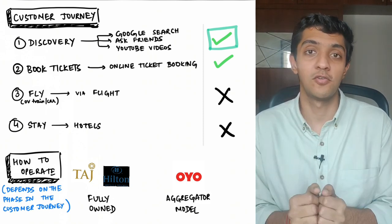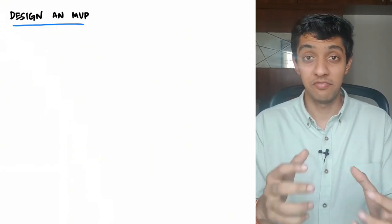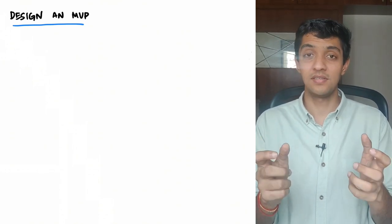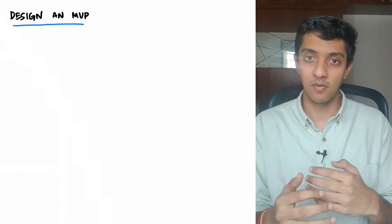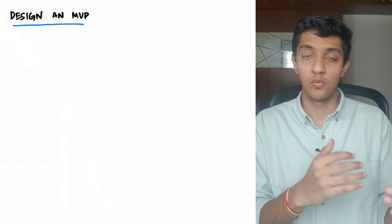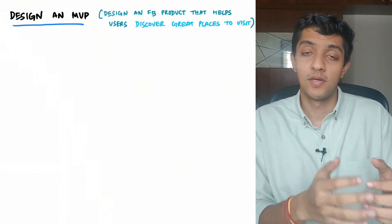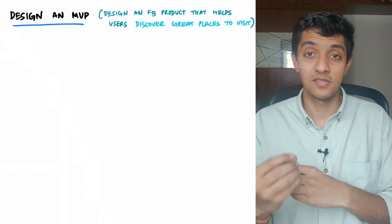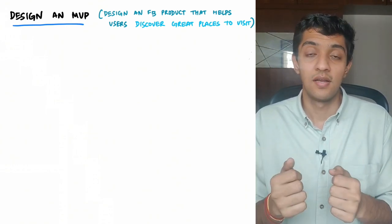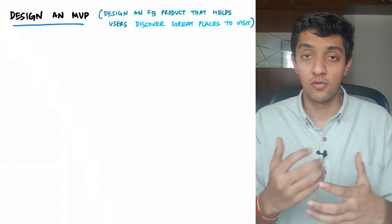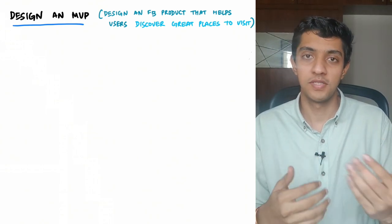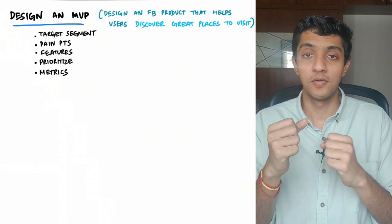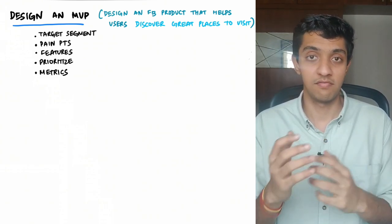Once you finish answering that, a follow-up question might be: how are you going to design the MVP for this particular solution? This is actually a very typical design question where you turn the problem statement from a strategy one to: Facebook wants to enter the travel industry and wants to launch a feature that helps customers discover great places to travel — now how do you design a solution for it? What you do here is go through the customer pain points, come up with some features, prioritize them, put down metrics, and then summarize the entire MVP to the interviewer.